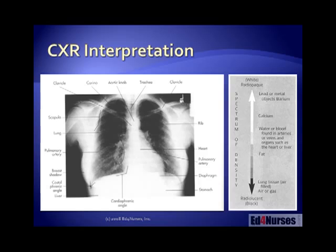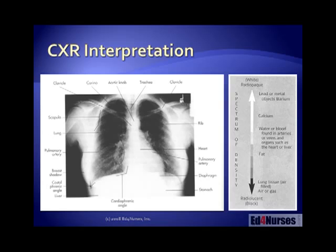In order to interpret a chest x-ray and get some value out of what you're seeing at the bedside — whether you've pulled up an x-ray on your computer or you're looking at an actual film — one thing to understand is that the dark stuff is air, and the white stuff is going to be something heavy like lead, metal, barium, calcium, water, or blood. So the heavy, thick stuff is going to be white and the light, air-filled stuff is going to be dark.